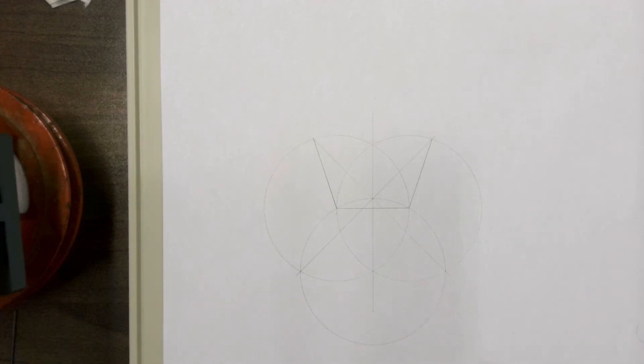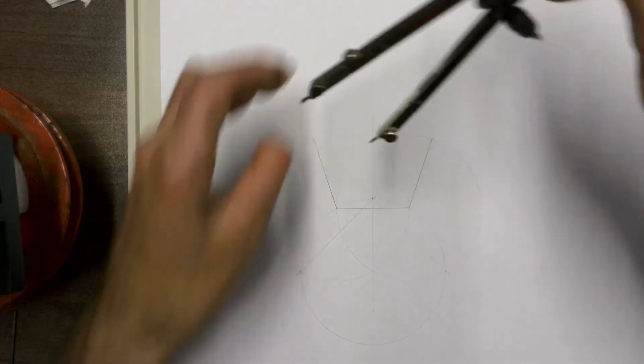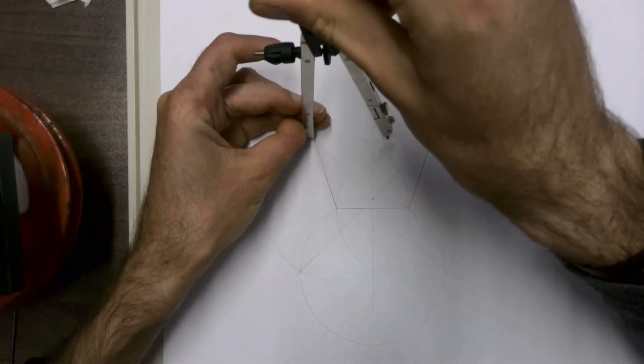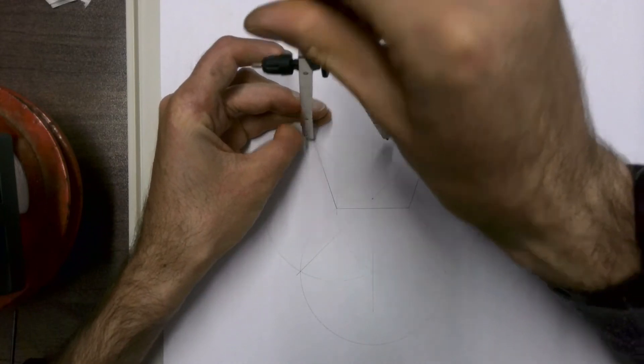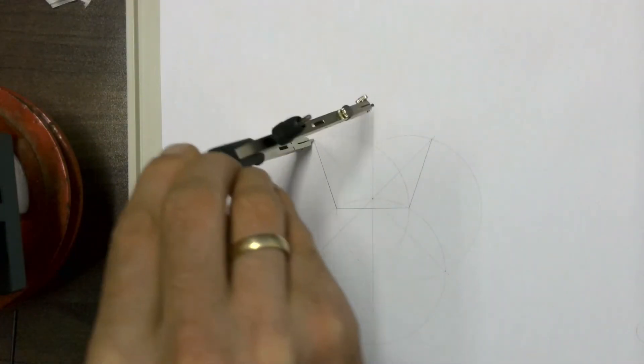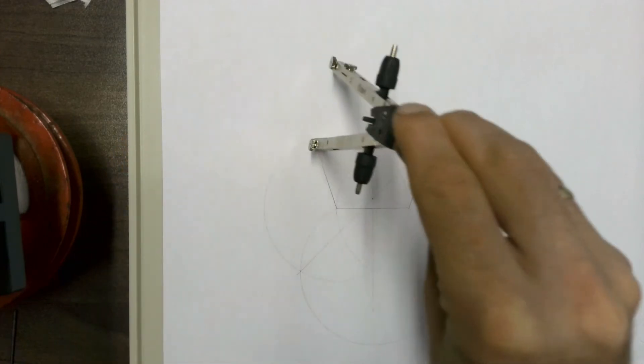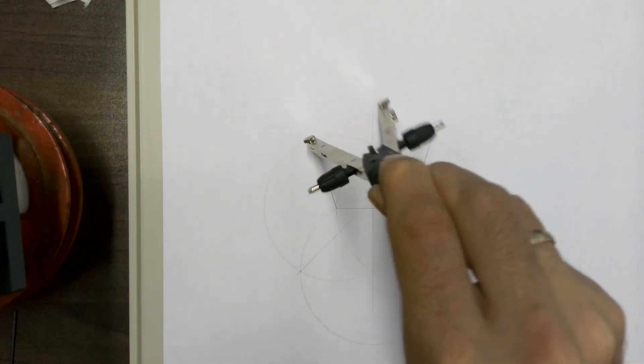Then, with your compass still on exactly the same size, place your compass point on the end of that line and draw an arc at the top.